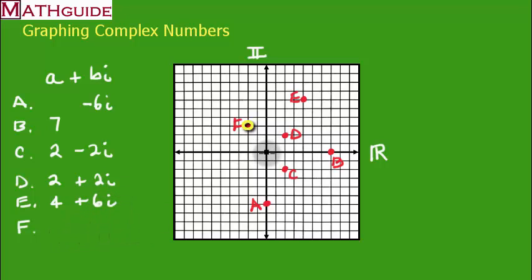And F, it's two to the left, three up. So two to the left and three imaginary up. And there you have it, there are all the points.